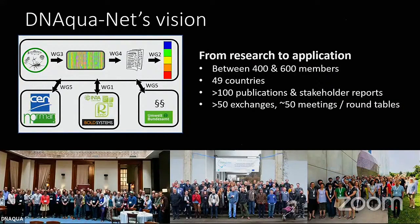DNAqua-Net's vision is to really get tools into practice — where can we complement the current monitoring system? We organize our network around five working groups. Working Group 3 deals with lab and field protocols — which methods are suitable, which are not. Working Group 4 deals with data — how do we handle them, how can indices be calculated. Working Group 2 tests how indices are calculated and how comparable they are to traditional metrics, because we should never completely break continuity to past methods.